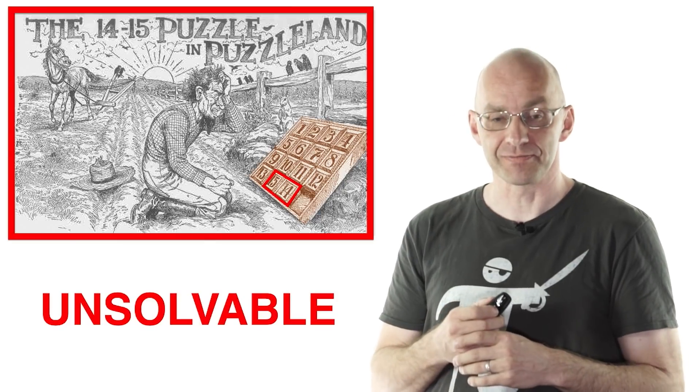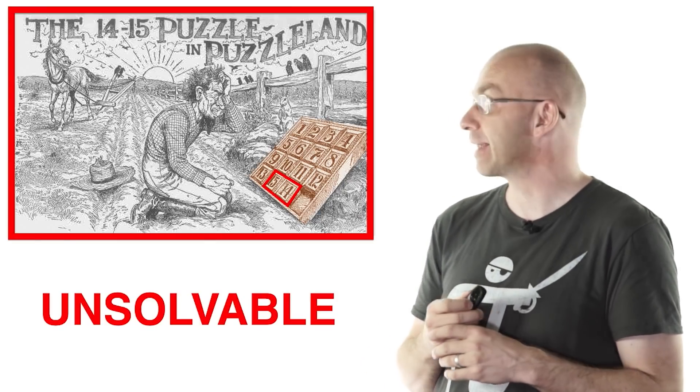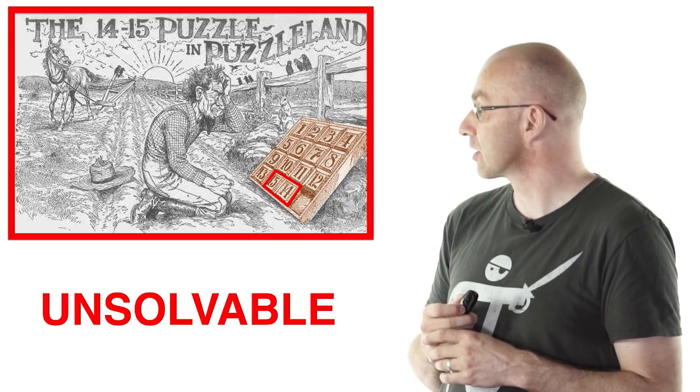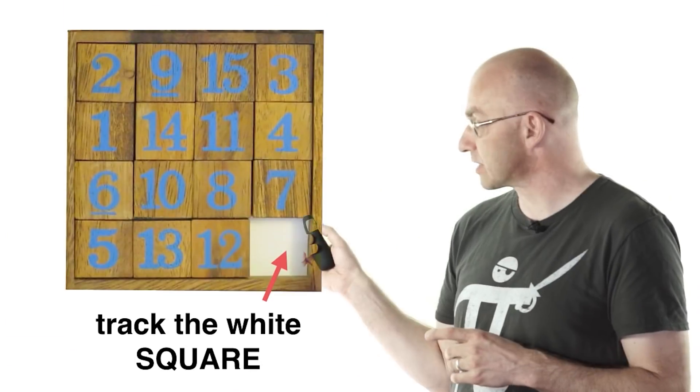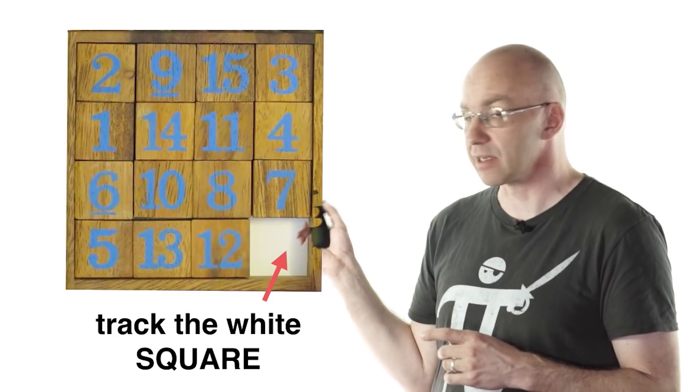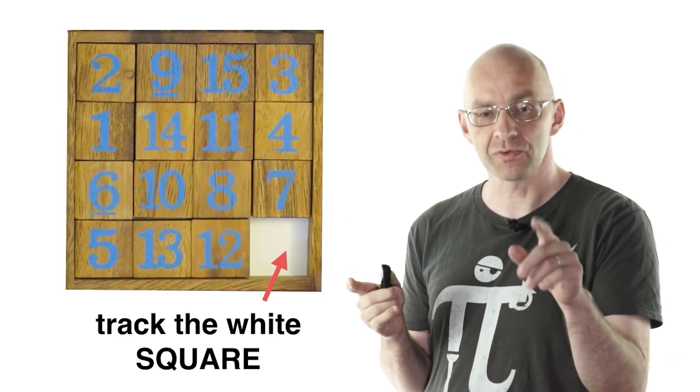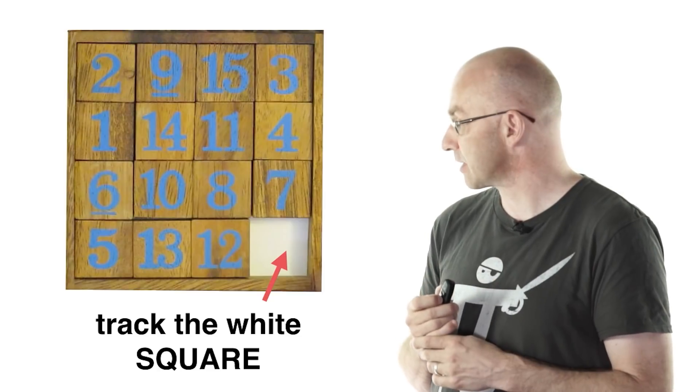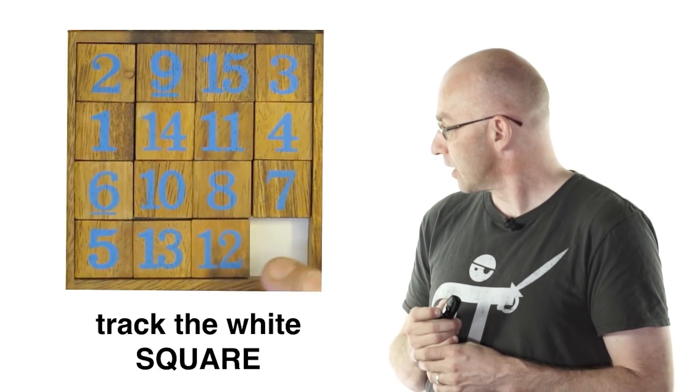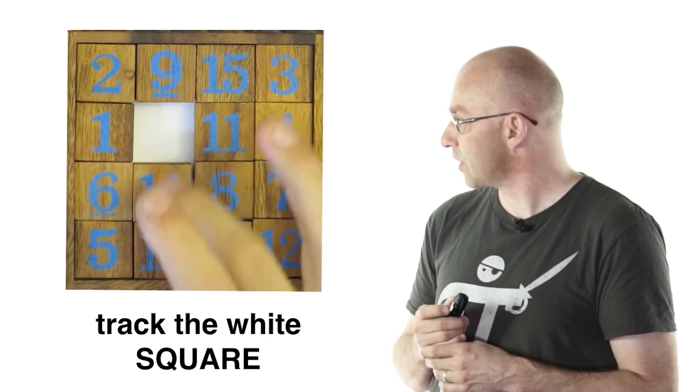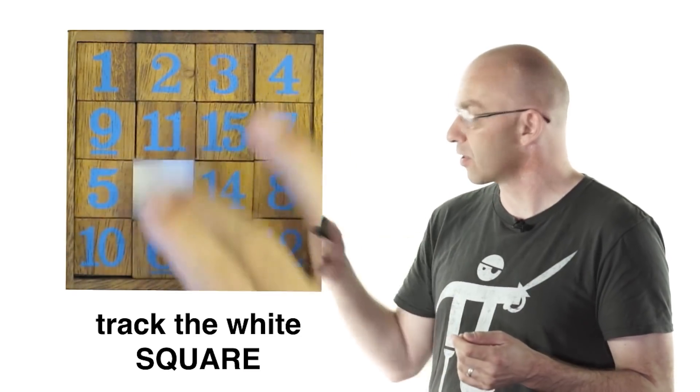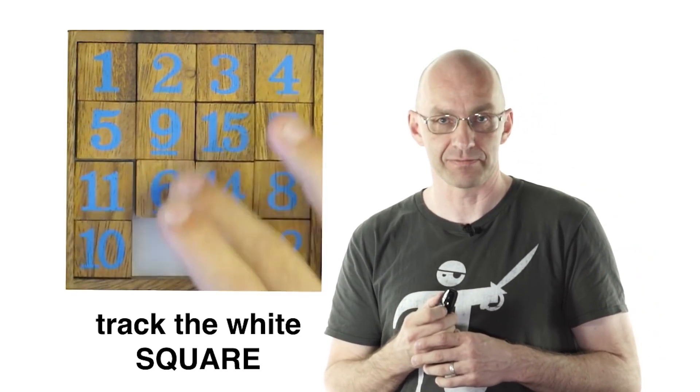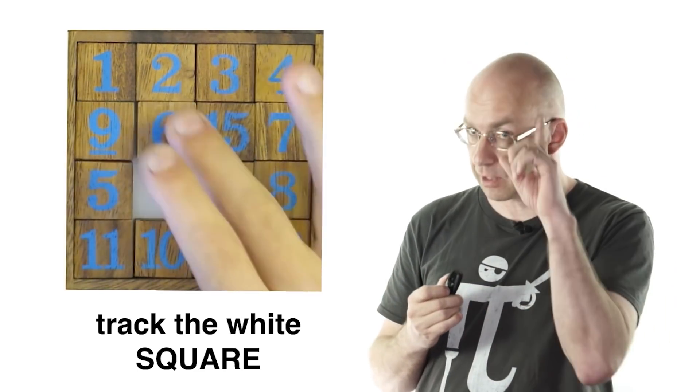What I want to show you now is three very simple observations, and those observations are going to say once and for all this can't be done. There's something very powerful - that's why I do mathematics. Kali, are you ready? Now have a look at this white square. I'm going to manipulate the pieces in the box and you're just going to watch the white square and tell me what you see. So push them around. What does the white square do? It just goes for a walk in this 4x4 grid. That's the first thing to note down.